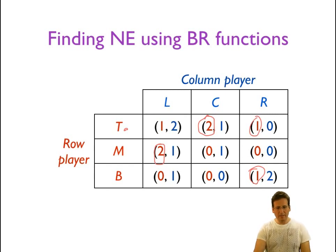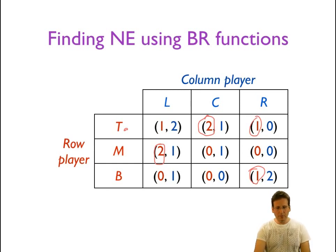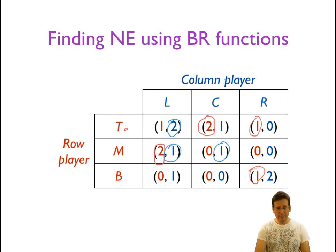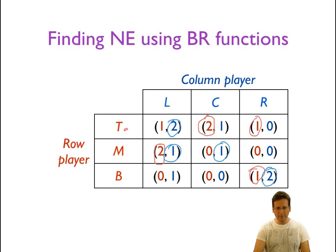Now for the column player: if the row player chooses top, left gives 2, center gives 1, and right gives 0 — so left is the best response. If the row player chooses middle, the column player gets 1 for left or center and 0 for right — so both left and center are best responses. If the row player chooses bottom, the column player does best by choosing right and getting 2.